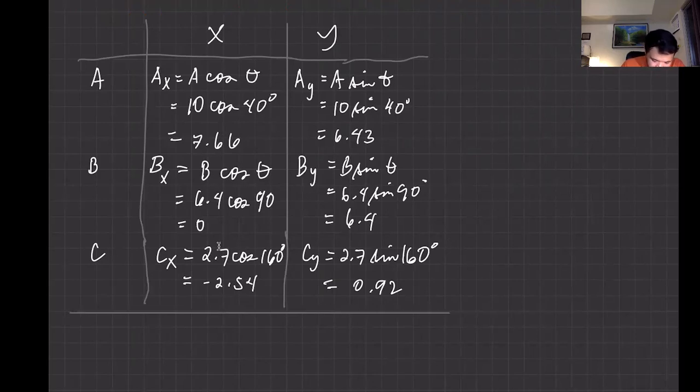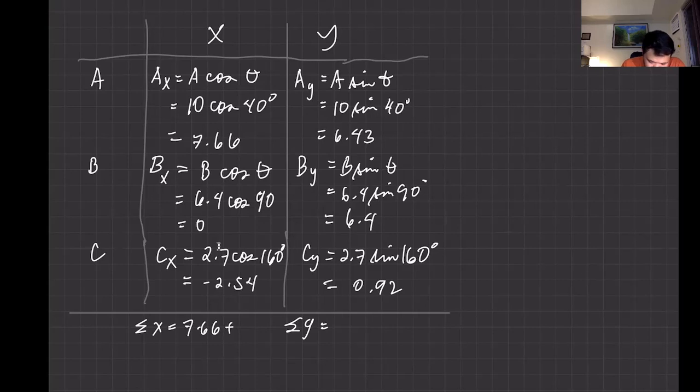And the next step is to determine the summation of all the x, then summation of all the y. Just add 7.66 plus—what is it, zero, yeah it was zero—so we don't need to write it, minus 2.54. And then summation of all the x should be equal to—what's your answer? It should be about 5.12. And the summation of y is 6.43 plus 6.4 plus 0.92, and then that should be equal to—summation of y is equal to 13.7.